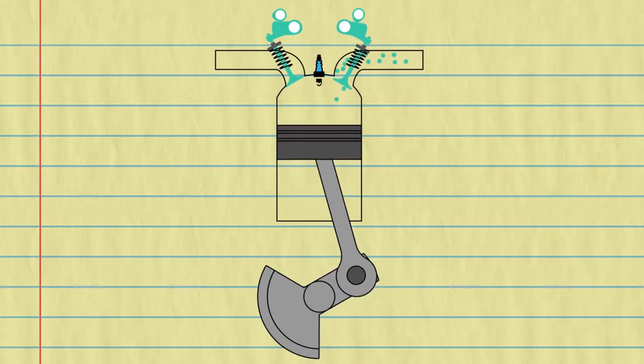The function of the intake valve and exhaust valve is important. The intake valve lets air in, and the exhaust valve lets gases out. When the engine moves, the valve opens.